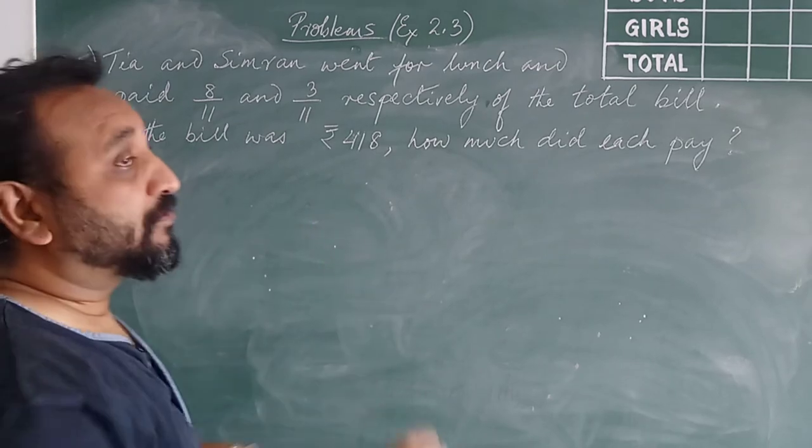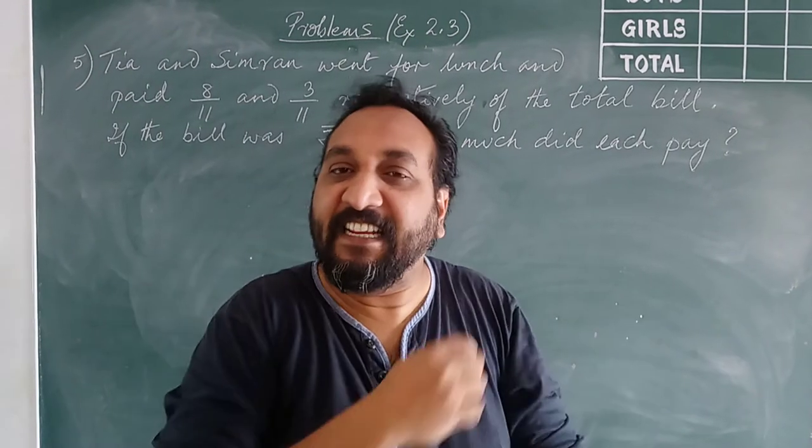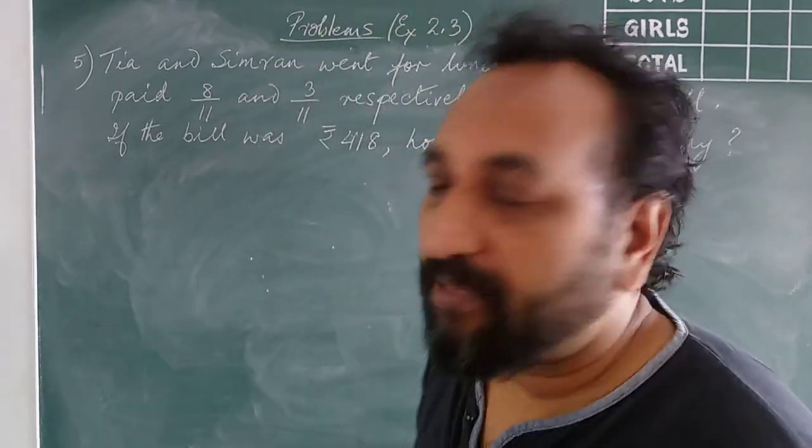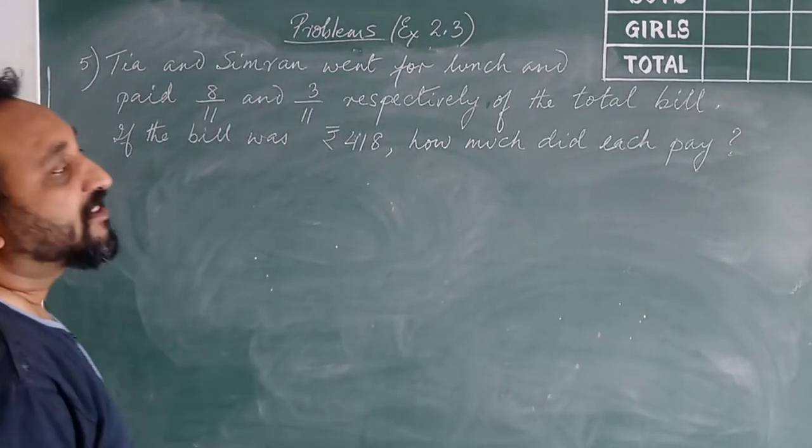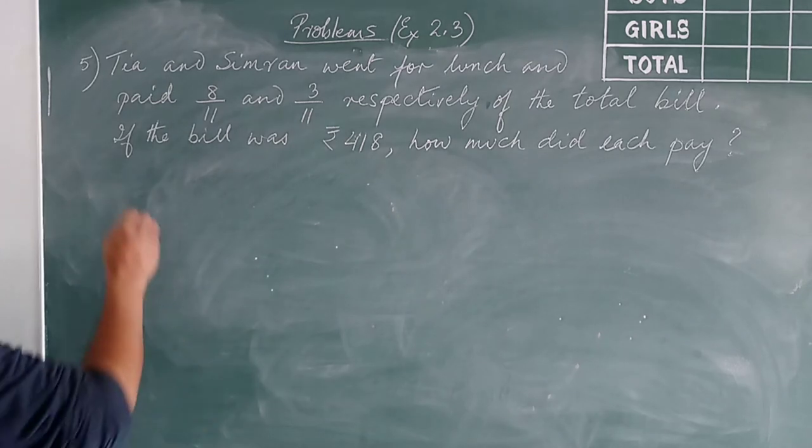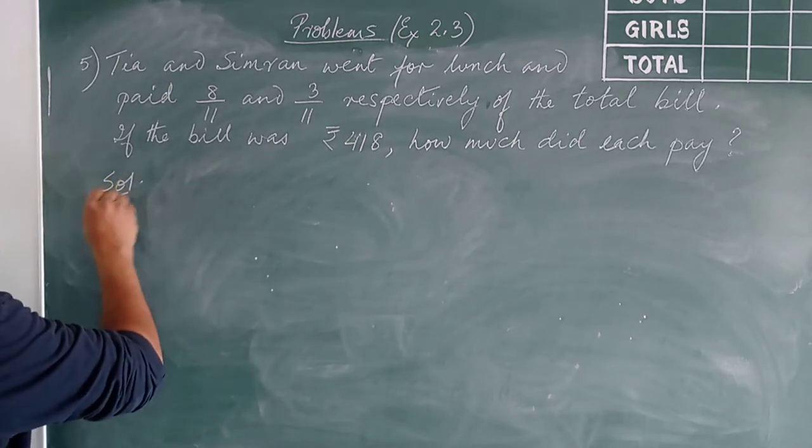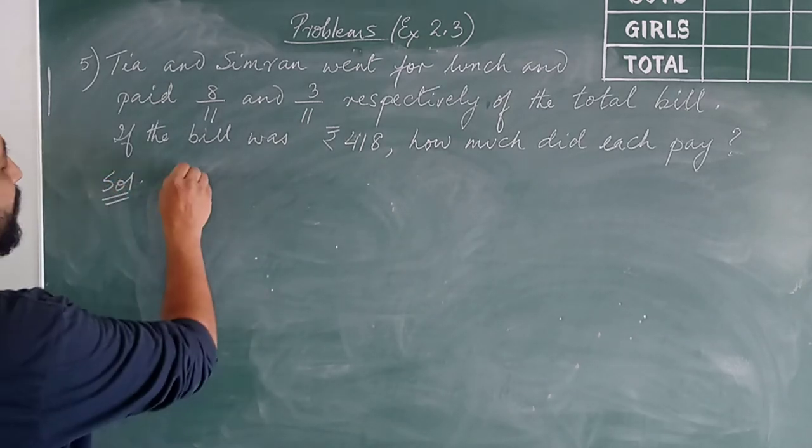So of the total bill, the total bill was rupees 418. Can you imagine, big amount. So these girls do dieting, anyway. Let's see what is this. First thing.